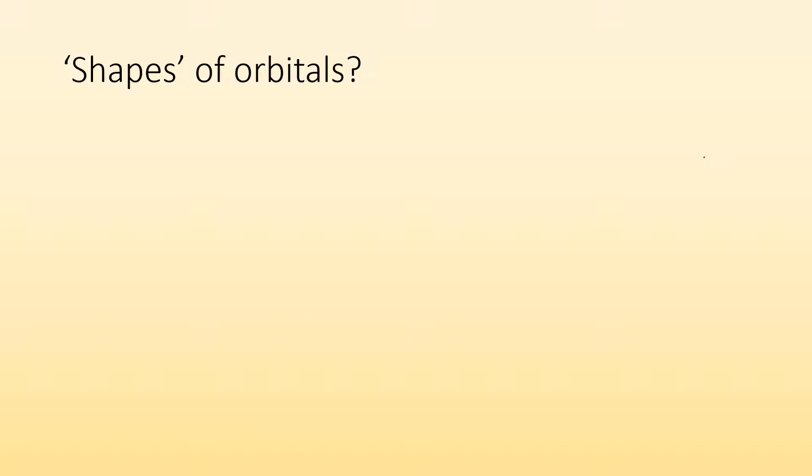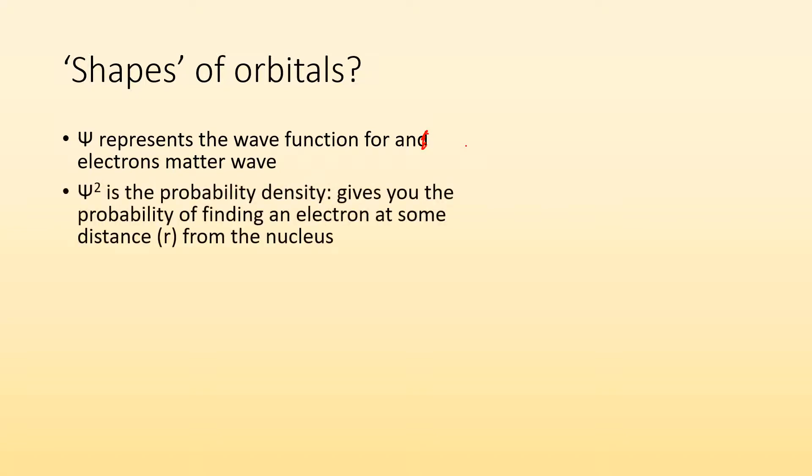So shapes of orbitals? What do you mean shapes of orbitals? Well, remember, psi represents the wave function for an electron's matter wave. So psi squared is the probability density. It gives you the probability of finding an electron at some distance r from the nucleus.